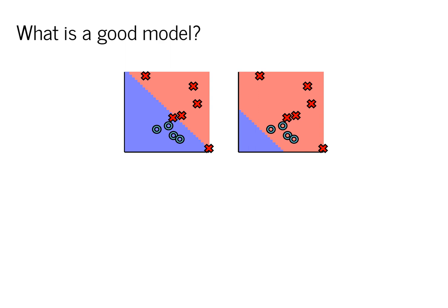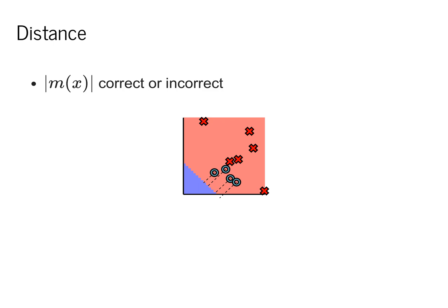For instance, in this diagram here, the model on the right is clearly doing worse than the model on the left. Many of the training points are on the wrong side of the line. But how can we turn this into an actual value that we can use in practice?